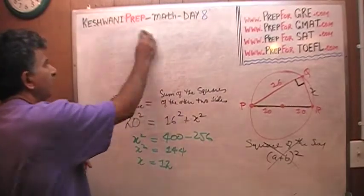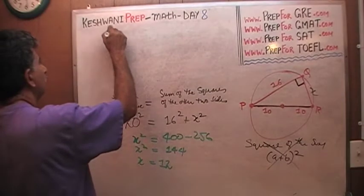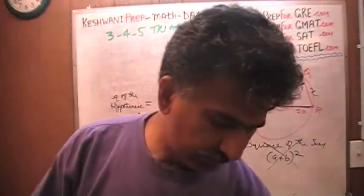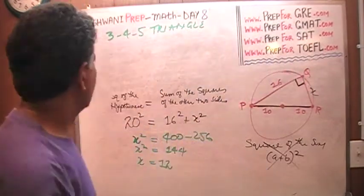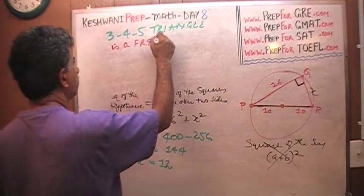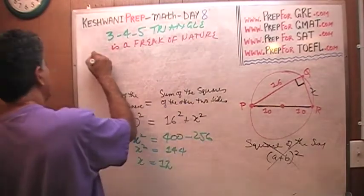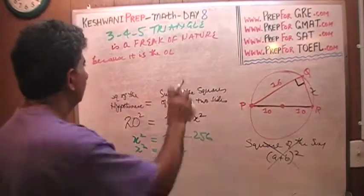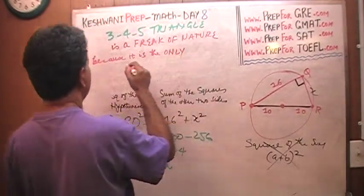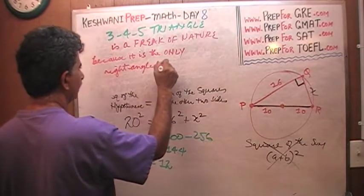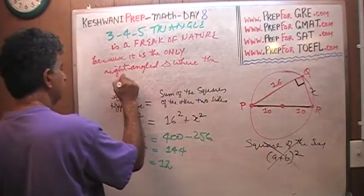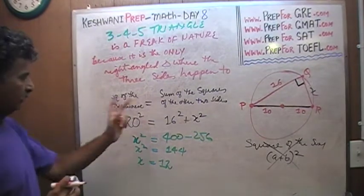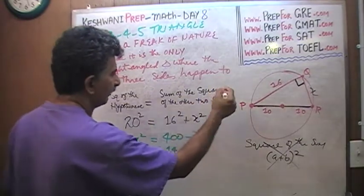What we have to realize is something called a 3-4-5 triangle. A 3-4-5 triangle is a fluke of nature — a freak of nature — because it is the only right angle triangle where the three sides happen to be three consecutive integers.